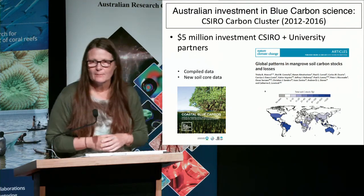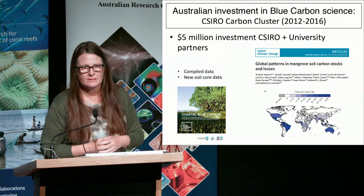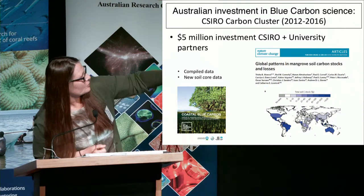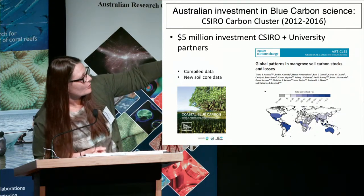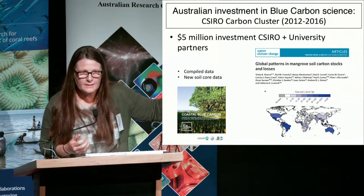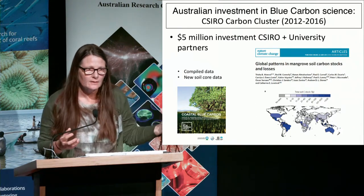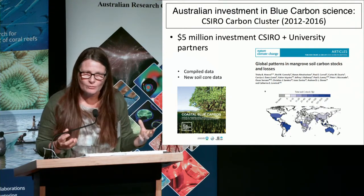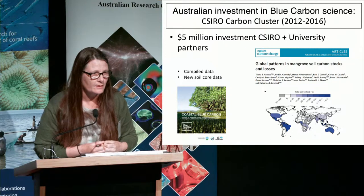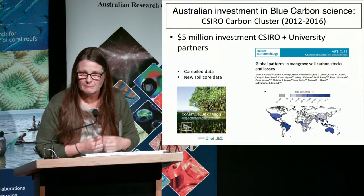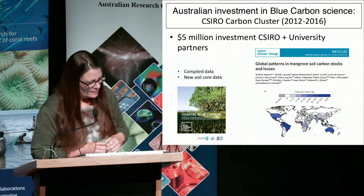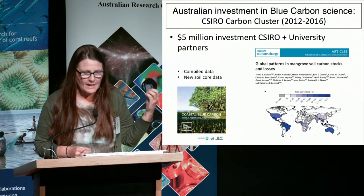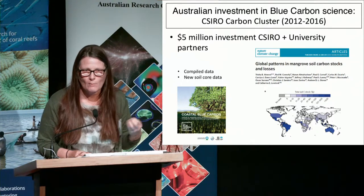This investment skilled up a lot of researchers and underpinned the emission reduction fund scoping document. Much blue carbon work internationally has focused on countries like Myanmar, Cambodia, and Malaysia, where mangrove loss is happening at an alarming rate. But it also allowed us to be poised for what might come next.